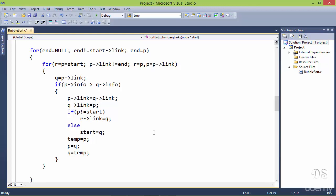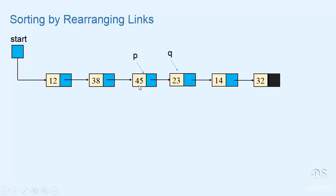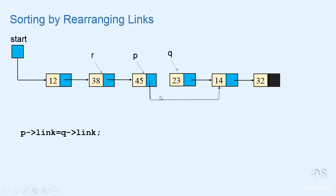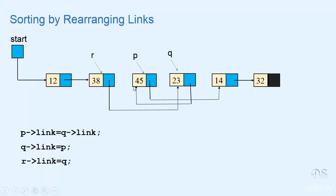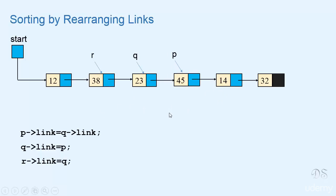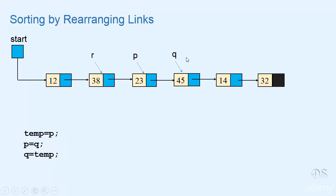Let's see in a slide how we can do this. Suppose in a pass, p and q are pointing to two nodes, and the info part of the p-node is bigger, so we have to exchange the positions of these two nodes. The node pointed to by q should come where p is and vice versa. For this we need a pointer to the predecessor of this node. The link part of p should point to q's next node, so we write p-link equals q-link. The link part of q should point to p, so q-link equals p, and the predecessor's link should point to q. Now the positions of the two nodes have changed: after r we have q, after q we have p. After this we exchange the values of p and q for the next iteration.